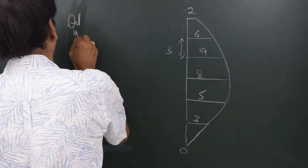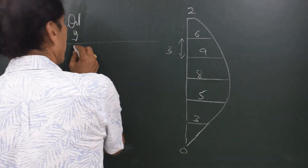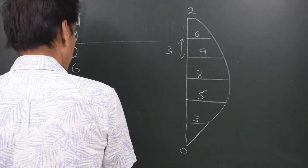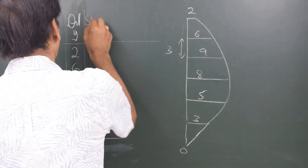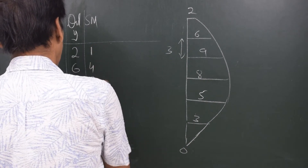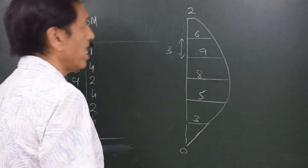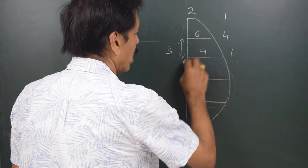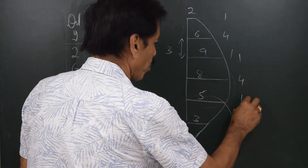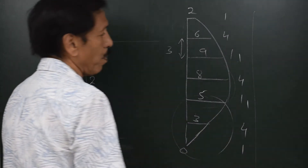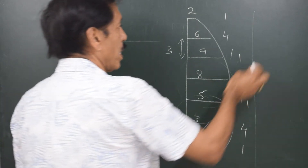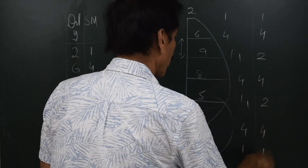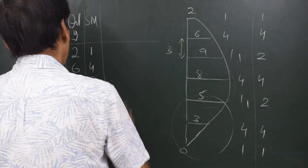The ordinates I will write as Y: 2, 6, 9, 8, 5, 3, 0. The Simpson's multipliers would be 1, 4, 2, 4, 2, 4, 1. This is because applying rule number one in groups of 1-4-1 three times gives us 1, 4, 2, 4, 2, 4, 1 when combined. The third column is Y times the Simpson multiplier, giving products: 2, 12, 18, 32, 10, 12, 0.